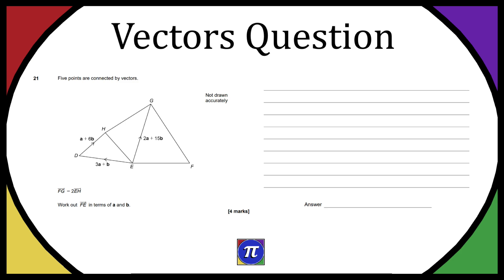Then we also have E to D, which is 3A plus B and we have E to G, which is 2A plus 15B. So they also tell us FG is equal to 2EH and then from there it says work out FE in terms of A and B.